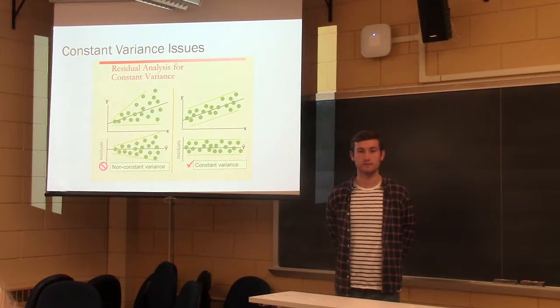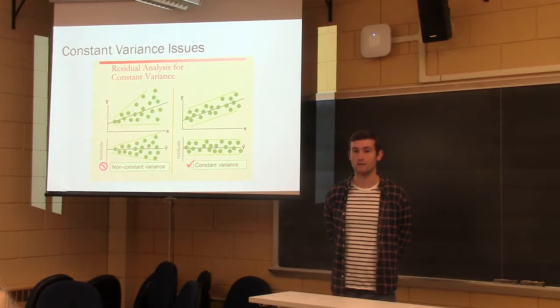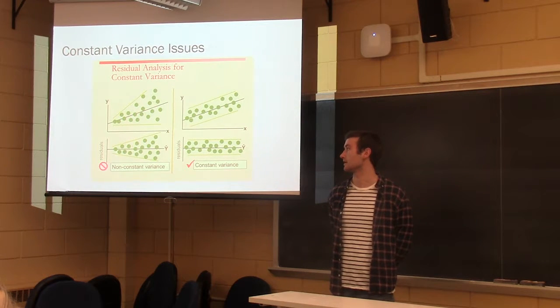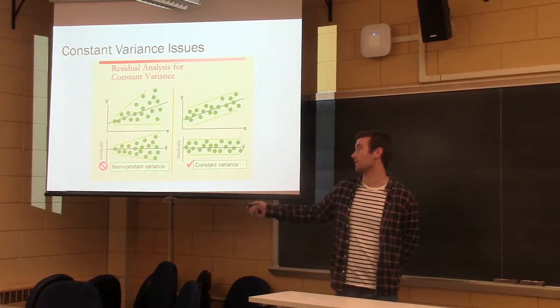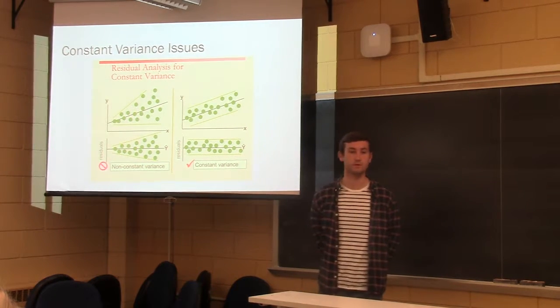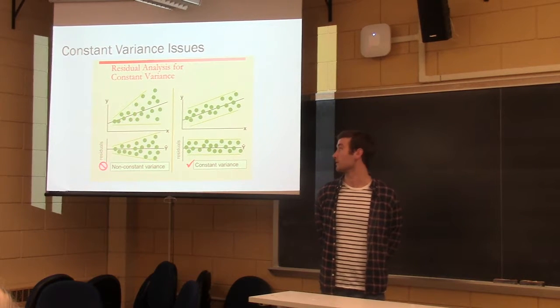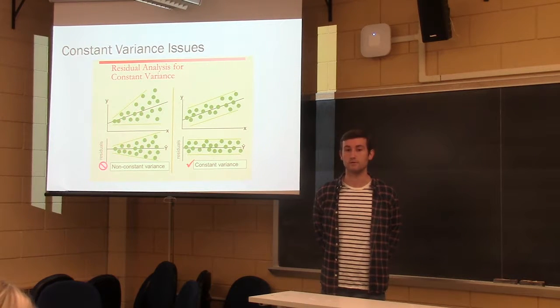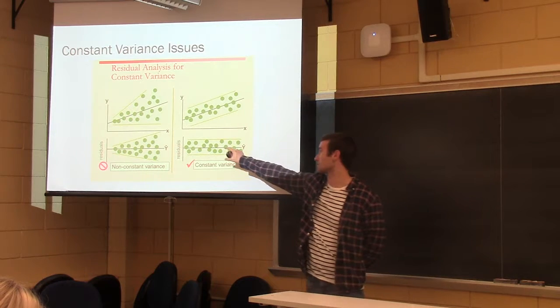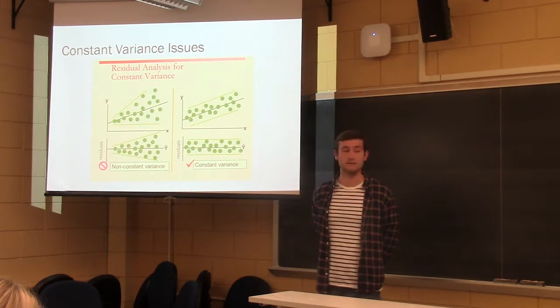And the reason we need to change our variables is so we can get to constant variance. So here's a picture of non-constant variance. These are the types of issues we see when we don't transform our variables when we should. And then we know what we have to do to transform our variables until our residual plots look something like this, where we see constant variance.